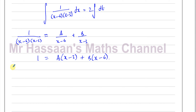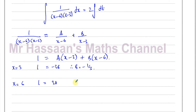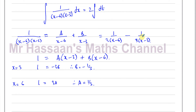To find A and B we use substitution. When x equals 3, the bracket (x minus 3) becomes zero, giving 1 equals B times (3 minus 6) equals minus 3B, so B equals minus one third. When x equals 6, we get 1 equals A times (6 minus 3) equals 3A, so A equals one third. Therefore 1 over (x minus 6)(x minus 3) equals one third times [1 over (x minus 6) minus 1 over (x minus 3)].